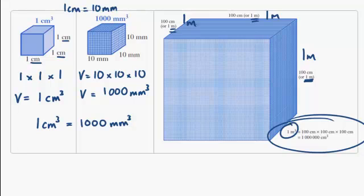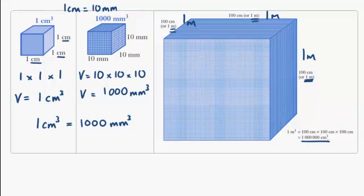But if we convert that to centimeters, it's 100 times 100 times 100. And when we do that calculation, you can see our answer here is 1,000,000 centimeters cubed. So what that tells us is that 1 meter cubed is equal to 1,000,000 centimeters cubed.